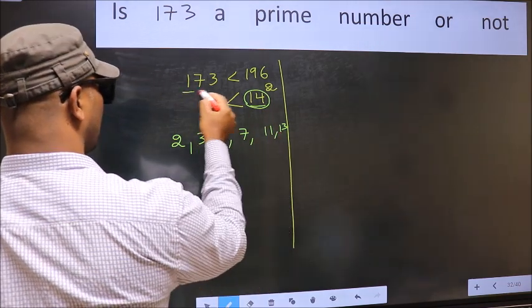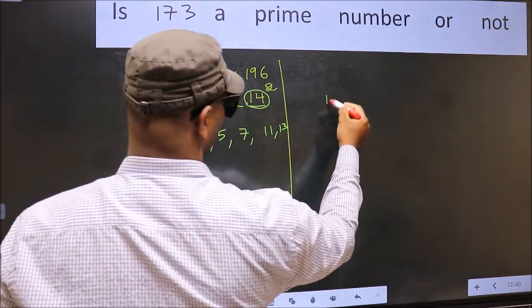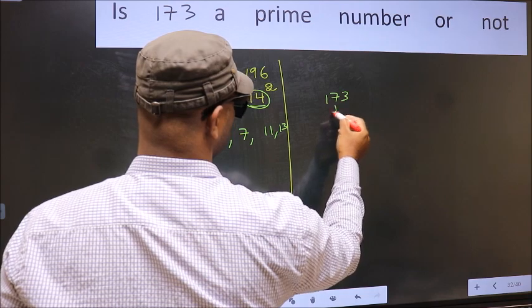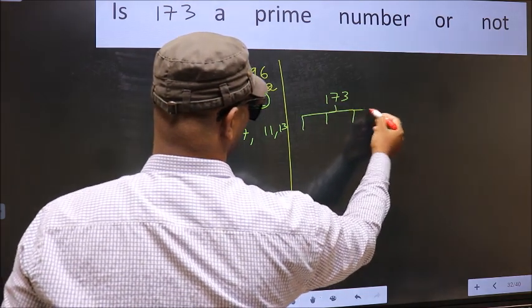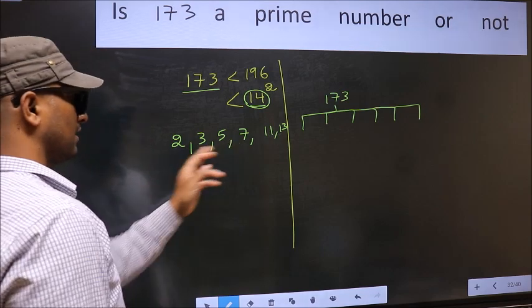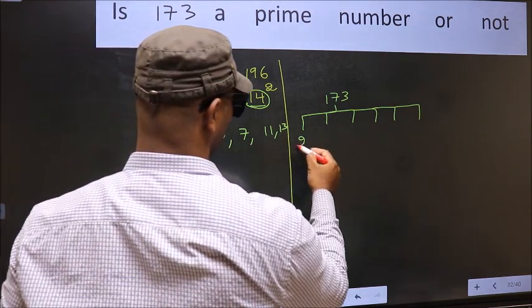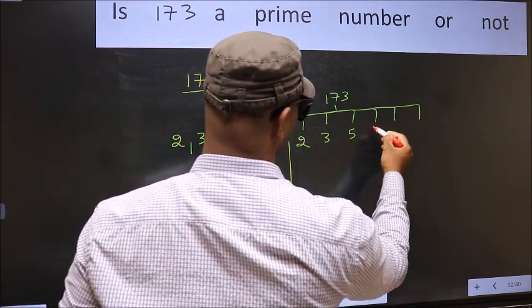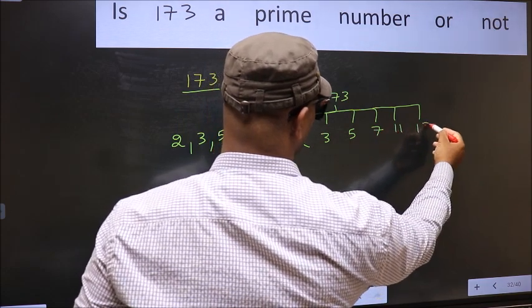Now, for this number, we should check divisibility by all these numbers. That is 2, 3, 5, 7, 11, and 13.